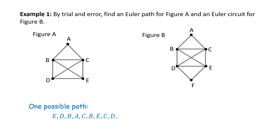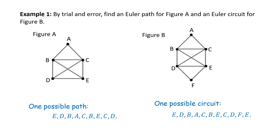For figure B, one possible circuit: I'll begin at E, go to D, B, E, F, E. We made or completed a circuit.